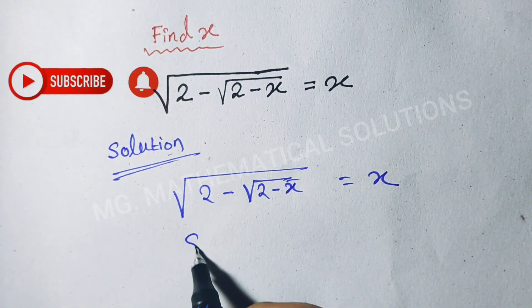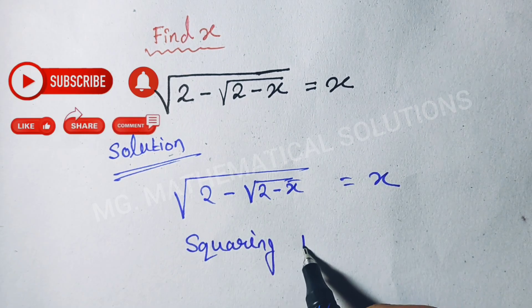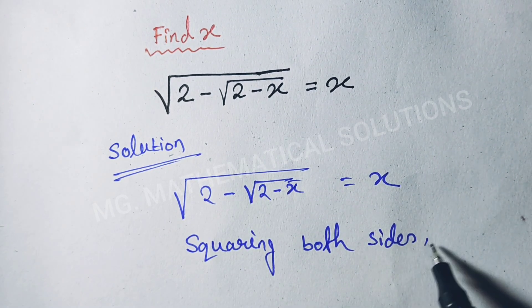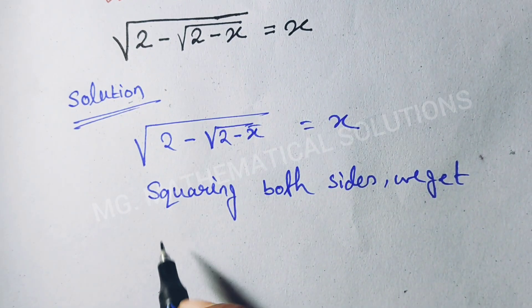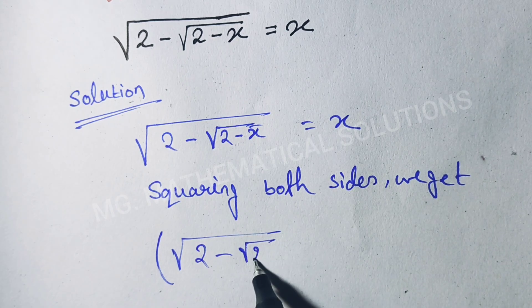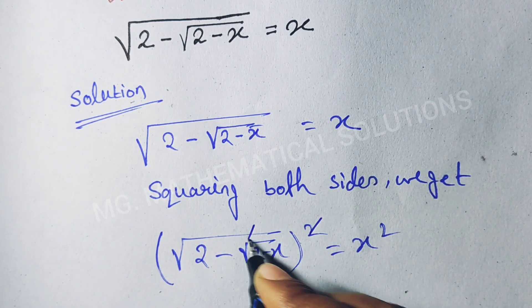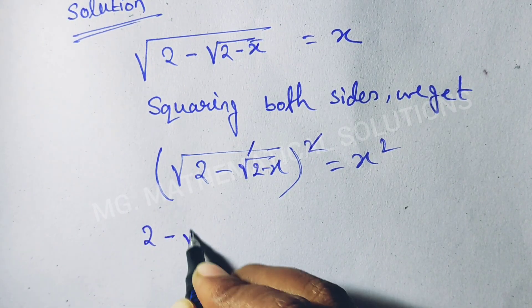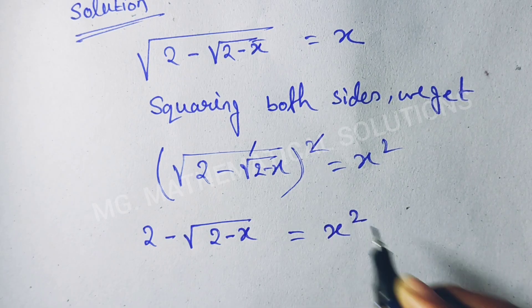First, we are squaring both sides. Squaring both sides gives: root under 2 minus root under 2 minus x, equal to x squared.